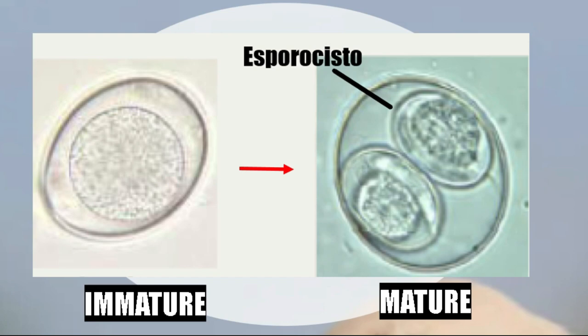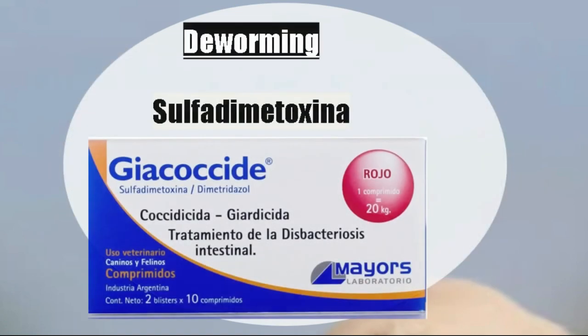We already talked about who it affects, the signs it produces, and how we can diagnose it. Now we are going to continue with the treatment. If a pet has coccidia, a treatment with sulfadimethoxine has to be carried out. To cut the cycle, first we deworm the animals — whether adults or puppies — so that they do not eliminate oocysts into the environment. The other part is to prevent the immature oocyst from becoming mature.